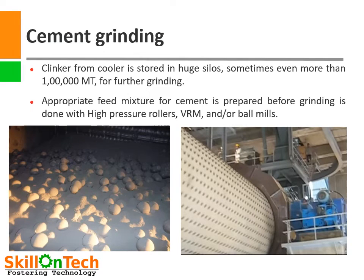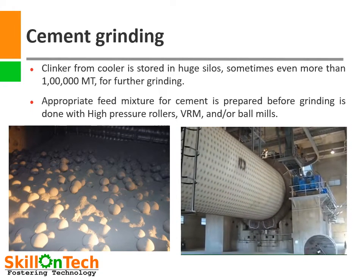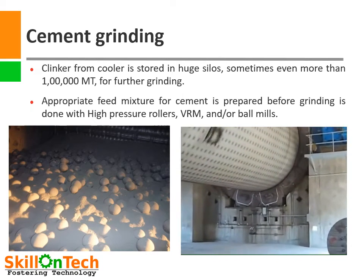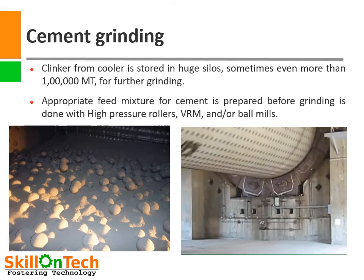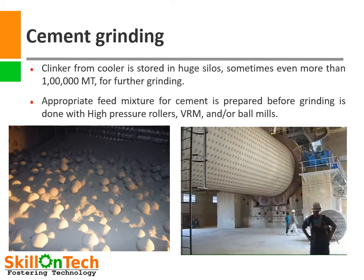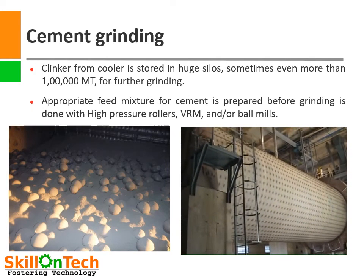Clinker from the cooler is transported and stored in huge silos, which can be as large as 100,000 metric tons. Then, an appropriate feed mixture of cement is prepared along with other minerals, admixtures, and materials in desired proportions before it is ground in cement mills. Cement mills can be a combination or standalone of high pressure roller mills, VRMs, and ball mills. In ball mills, grinding is done by the action of steel balls which fall after rotation onto material and crush it. Ball mills can be quite large — several meters in diameter and up to 10 meters in length.